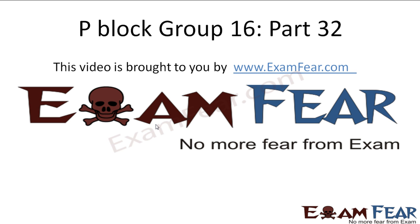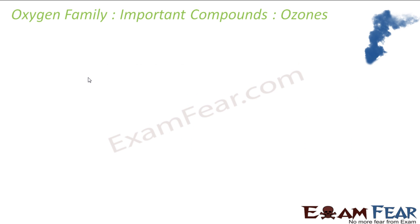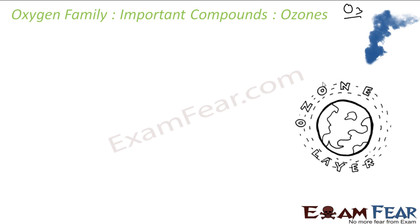The next topic is ozone, O₃, which is blue in color and is an allotropic form of oxygen. You must have heard of the ozone layer, which protects us from ultraviolet rays. The Sun emits UV rays, and this ozone layer reflects all the UV rays so that only normal rays reach the Earth, keeping us protected.